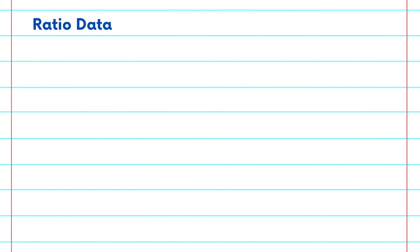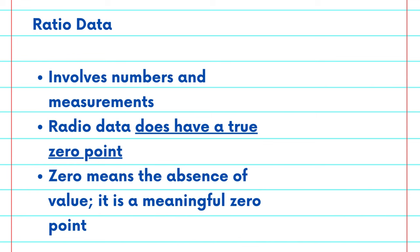Talking about ratio data, like interval data, it involves numbers and measurements. But the key difference is that ratio data has a true zero point.